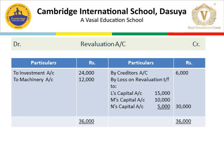Totaling the revaluation account: the debit side is greater, so there is a loss on revaluation of Rs. 30,000, which is transferred to partners L, M and N's capital accounts in old profit sharing ratio of 3:2:1. Rs. 30,000 is divided giving L Rs. 15,000, M Rs. 10,000, and N Rs. 5,000. This finishes the revaluation account.